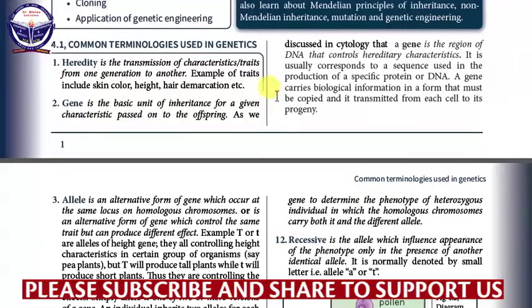Our first terminology is heredity. As we defined yesterday, it is the transmission of characteristics or traits from one generation to another — that means from a parent to offspring and then from the offspring to a grand offspring. There are different categories of traits. For example, they include skin color, hair, and hair demarcation — hair demarcation meaning whether hair is smooth or coarse.